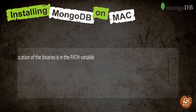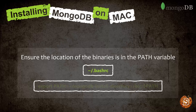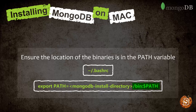We also need to ensure that the location of these binaries is in our path variable, so whenever we execute commands like mongod it will automatically pick it up from the path variable. To do that we can simply update the .bashrc file and add: export PATH equals the path of the MongoDB installation forward slash bin colon dollar PATH. So that way we will be able to update the path settings as well.